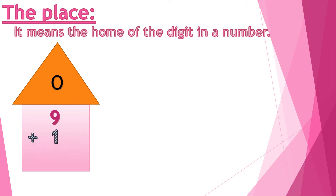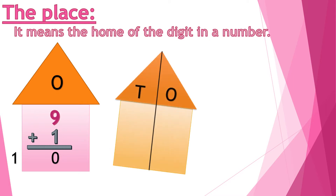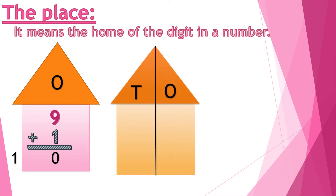When we added 1, it became 10. 10 is two digits, so this home is very small. So we built a new home that has two rooms. The first room is 1s, and the second room is 10s. The greatest number I can put inside it is 99.